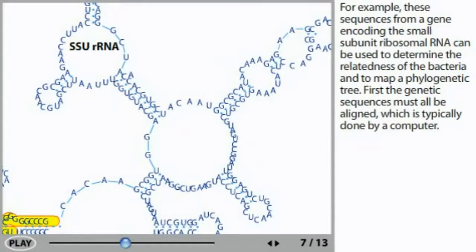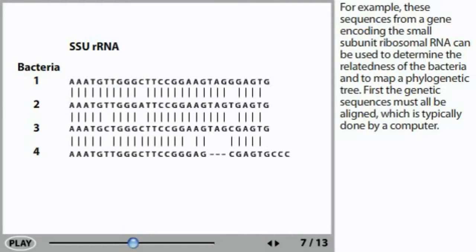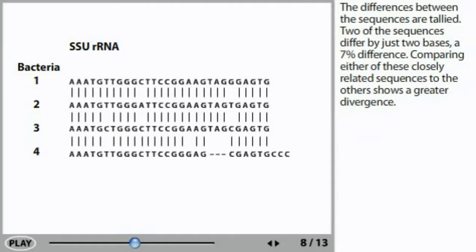For example, these sequences from a gene encoding the small subunit ribosomal RNA can be used to determine the relatedness of the bacteria and to map a phylogenetic tree. First, the gene sequences must all be aligned, which is typically done by a computer.